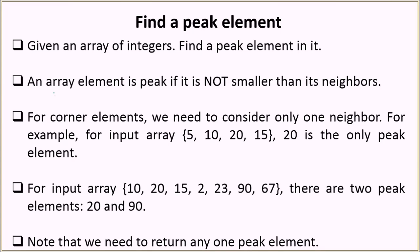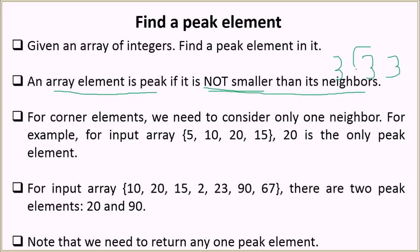So what is a peak element? An array element is a peak if it is not smaller than its neighbors. Note that we are saying not smaller, not greater. So if we have a combination 3, 3 and 3, and we are checking if the middle 3 is a peak element, then as the middle element is not smaller than its neighbors, this will be a peak element.